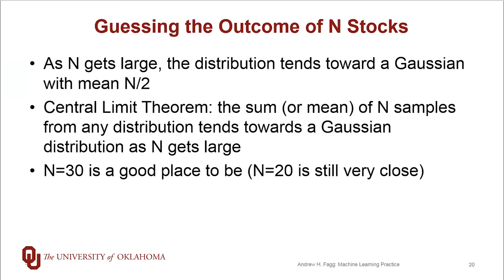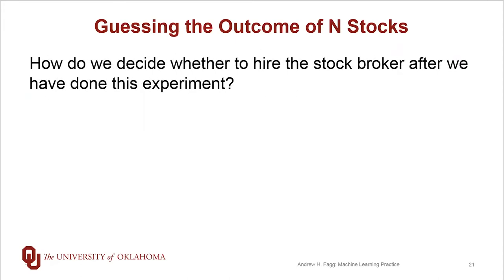Empirically, n equals 30. For all intents and purposes, the sum or the mean will fall along a Gaussian distribution. And in practice, n of 20 gets you pretty arbitrarily close to a Gaussian. So the question is, after we do this experiment, how do we make a decision as to whether or not to hire this stockbroker?